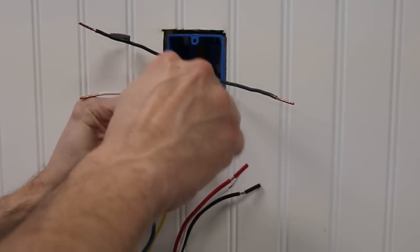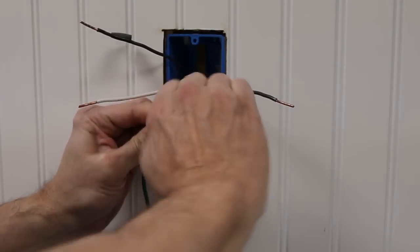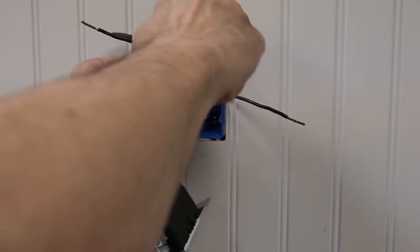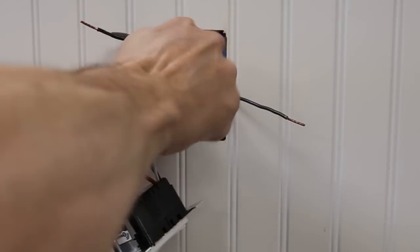To wire, take the green ground lead on the device and the ground wallbox wire and twist in a clockwise direction. Next, wire together the white lead on the device and the white neutral wallbox wire.